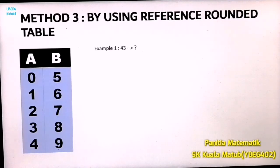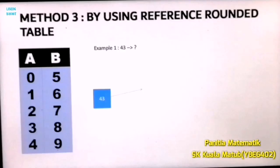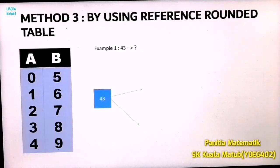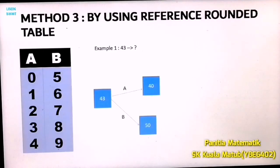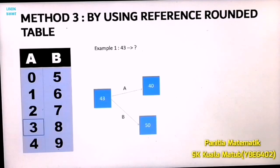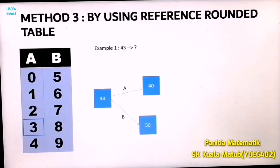Let's round off number 43 to the nearest ten. Write number 43 and draw two arrows — upside and downside. Label the upside arrow as A and the downside arrow as B. Number 43 is between number 40 and 50. Look at the ones digit — in this case, it's number 3. Find number 3 in the reference rounded table. It's under Table A. Therefore, we choose the number pointed by arrow A as the answer.